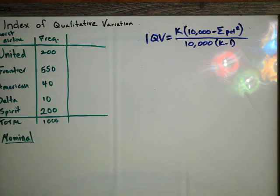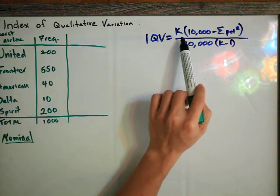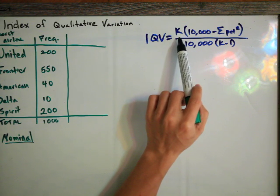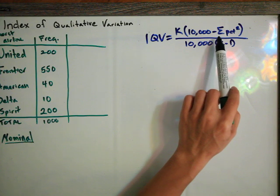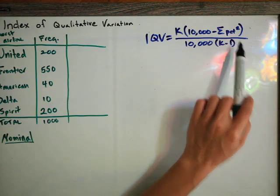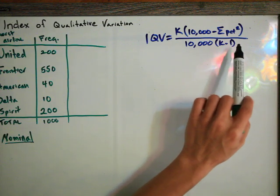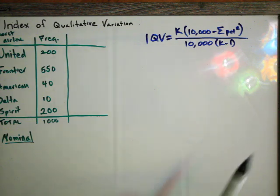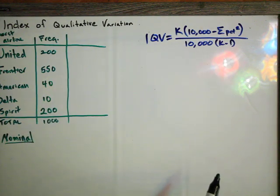To find the Index of Qualitative Variation, we're going to use this formula: K — which is the number of categories — times 10,000 minus the sum of all percent squared, divided by 10,000 times K minus 1. So what we're going to need is a column in our frequency distribution that represents percent squared.